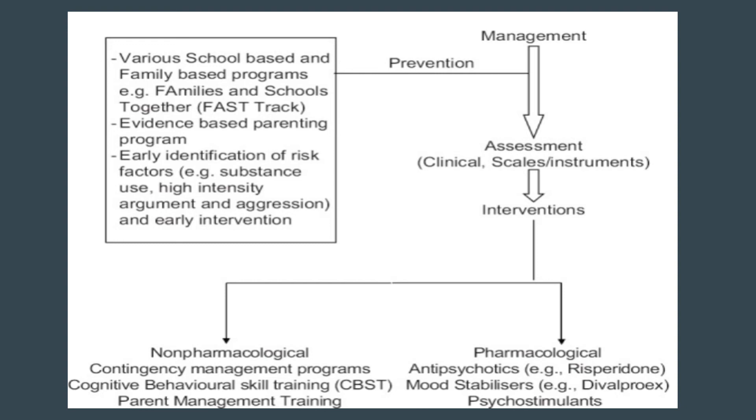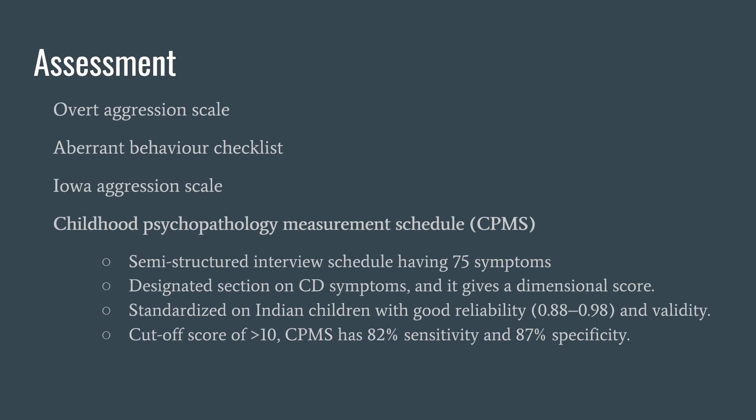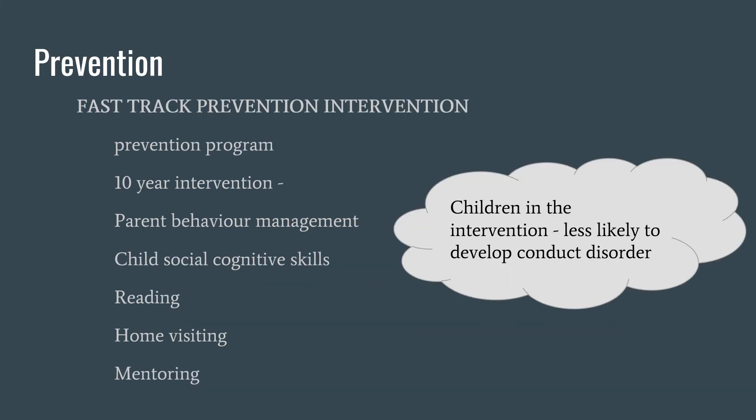Management can either be prevention or, if the patient has the disorder, pharmacological or non-pharmacological treatment. For the prevention part, there are various intervention programs that have been introduced. First is the Fast Track Prevention Intervention. It was a 10-year intervention program which was started when children were in kindergarten itself. It included parent behavior management, development of cognitive skills for the child, increasing the child's ability to read, and mentoring and home visits done by the faculty. It was found that children in this intervention program were less likely to develop conduct disorder when followed up over a period of 10 years and for two years after that.